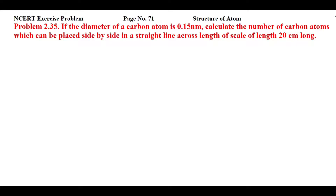This is NCERT exercise problem 2.35 from page number 71 of Structure of Atom. The problem states: if the diameter of a carbon atom is 0.15 nanometer, calculate the number of carbon atoms which can be placed side by side in a straight line across a scale of length 20 centimeter long.